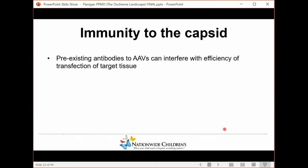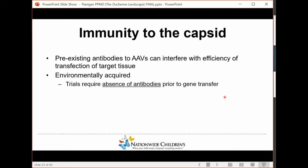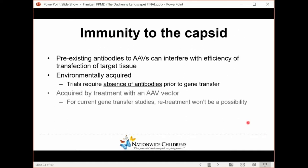There are challenges with using AAV. Among those challenges are immunity to the capsid. These are pre-existing immunities to AAVs that can be acquired in the environment. These can interfere with the efficiency of transfection into the target tissue. So trials require absence of antibodies prior to gene transfer. It's worth noting they're definitely acquired by treatment with the AAV vector. So right now, we think treatment is a one-time thing. We don't think retreatment is a possibility. Although in the future, it's quite likely that retreatment will be a possibility.